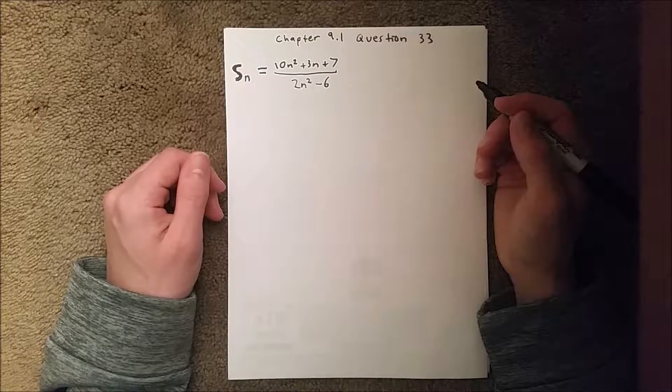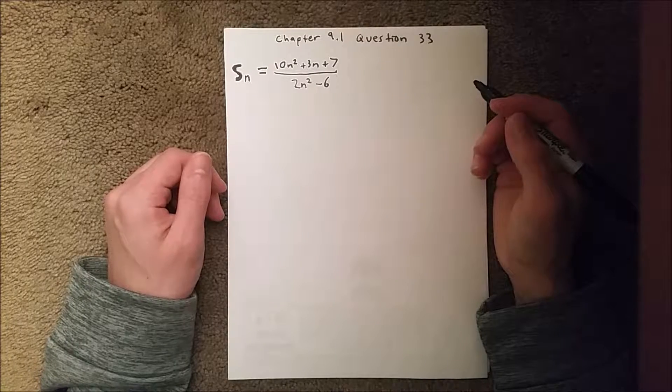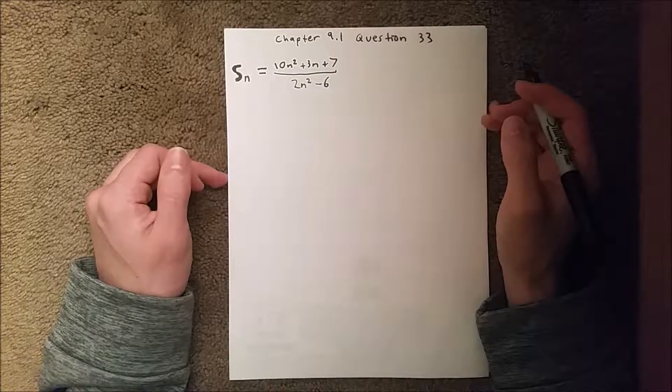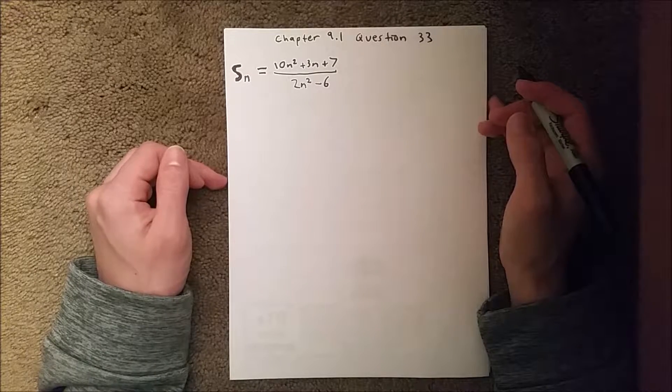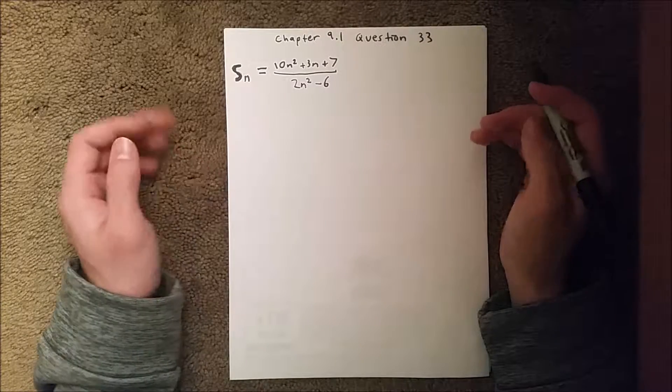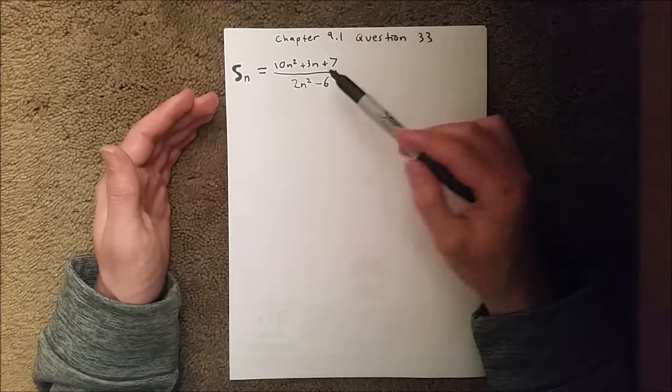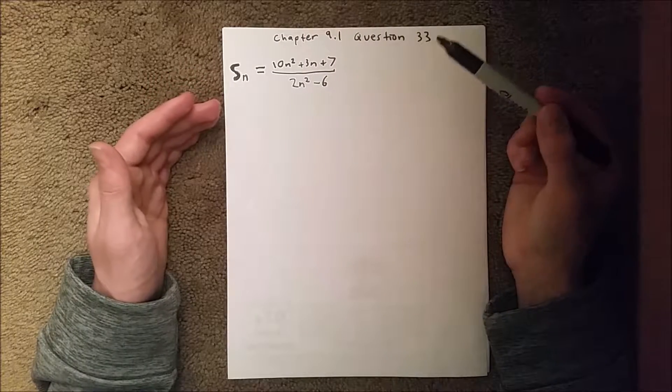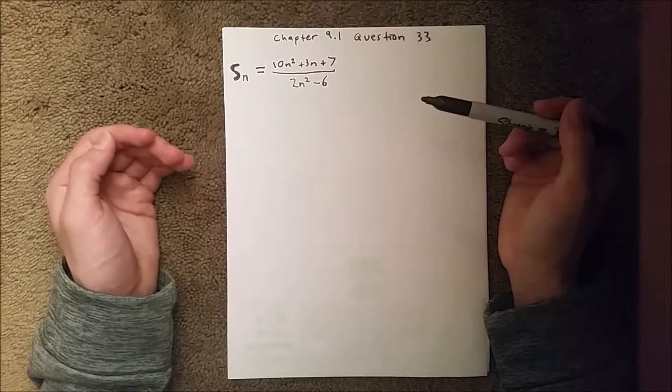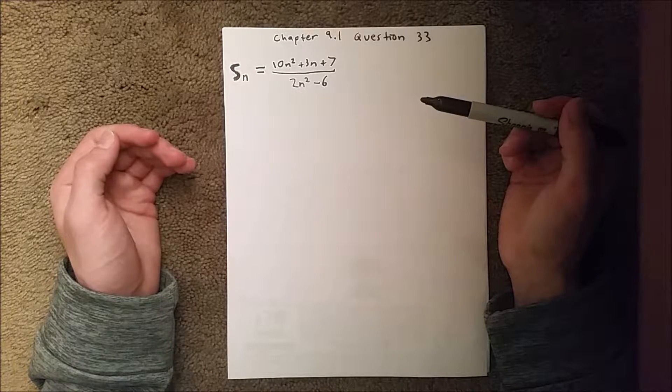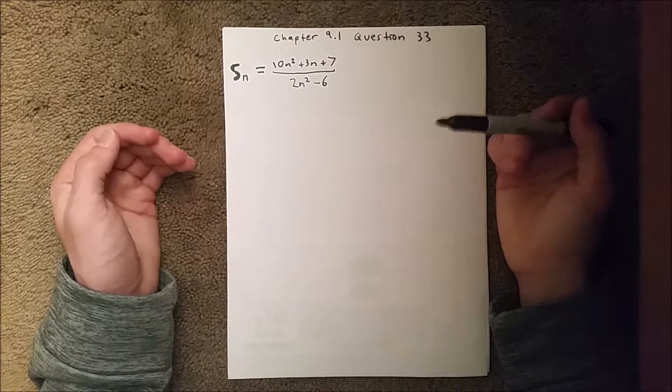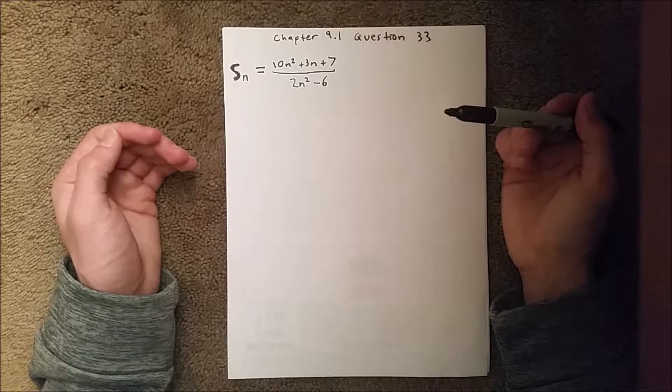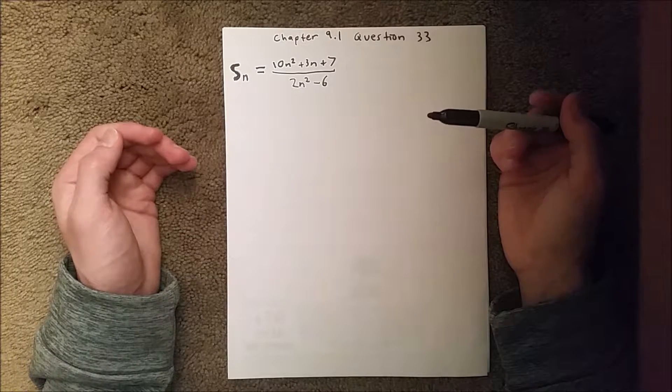The way you want to do this is you want to use the nth term test or the limit test as some may call it, where you take the limit of the sequence as your n value goes to infinity. For a sequence, if your limit is a finite number including zero, it converges to that number, but if it equals infinity, it diverges.